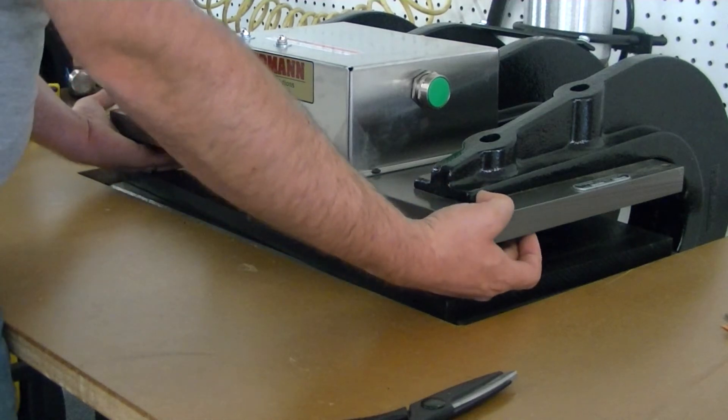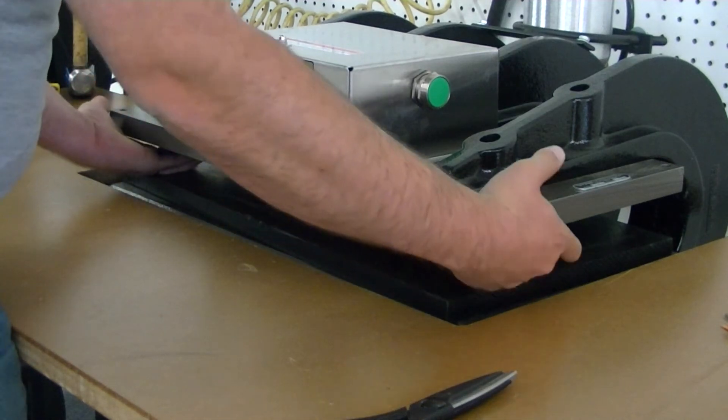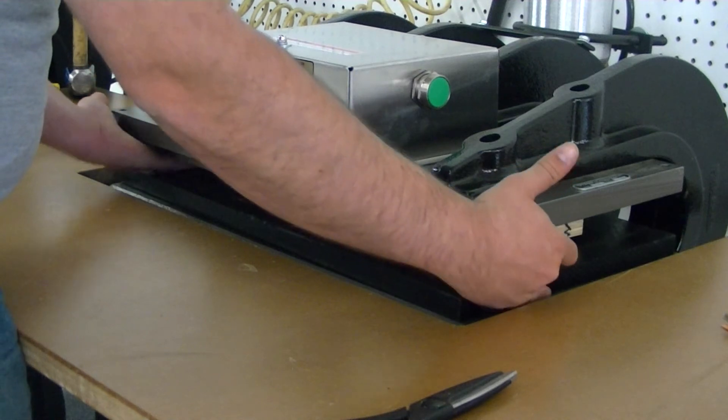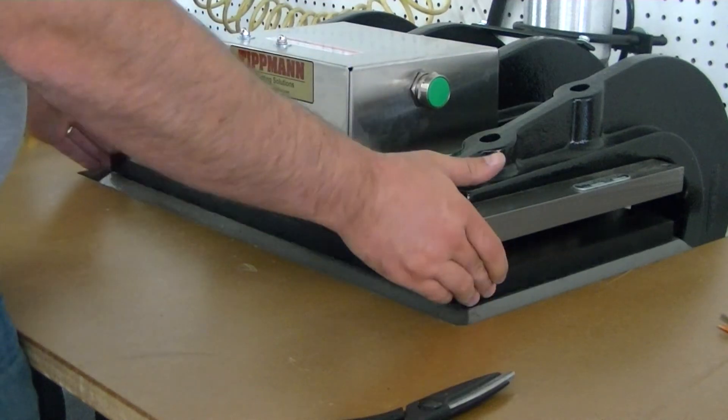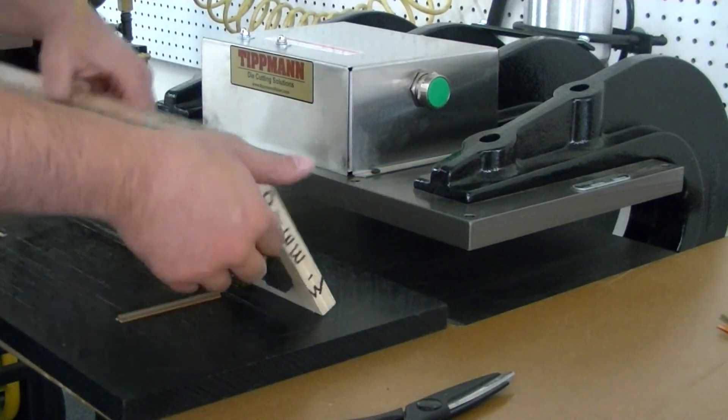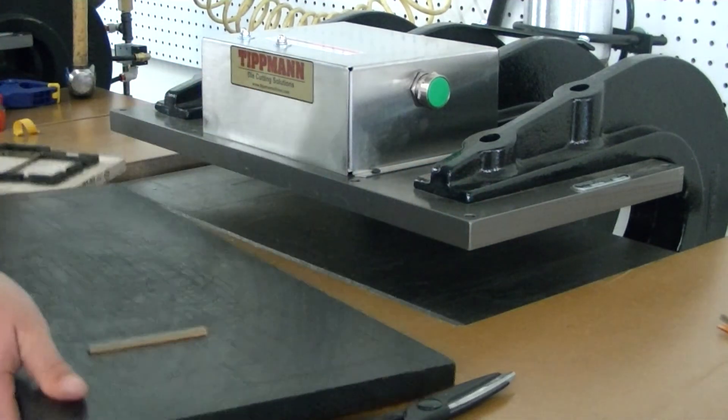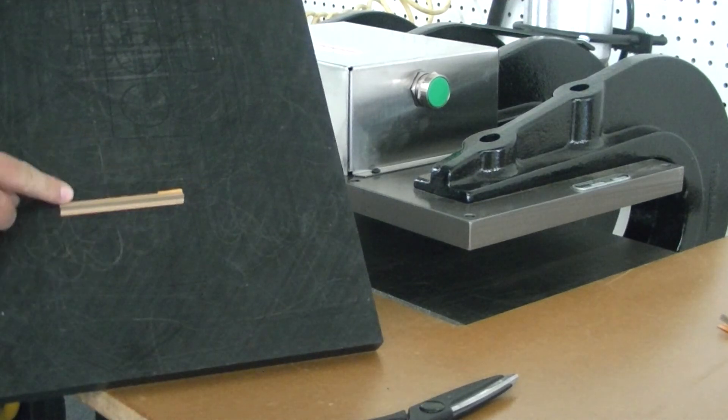You would have this attached to the top platen and the cutting board attached to the bottom platen. Then press it and you can see that the matrix is positioned on the board.